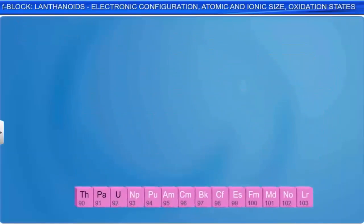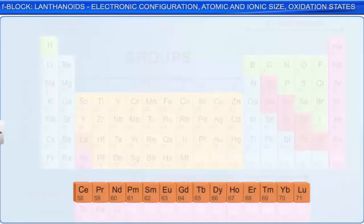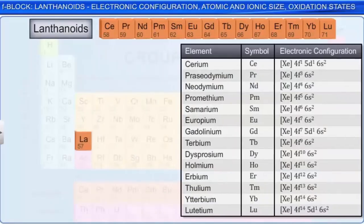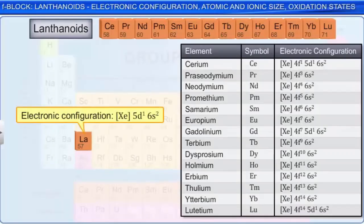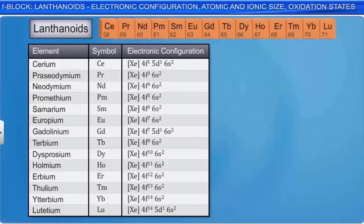The electronic configuration of the lanthanoids is shown in the table. Lanthanum, the D-block element preceding this series, has the electronic configuration of xenon core 5D1-6S2. We might expect that the 14 elements from cerium to lutetium would be formed by adding 1, 2, 3, up to 14 electrons to the 4F level.